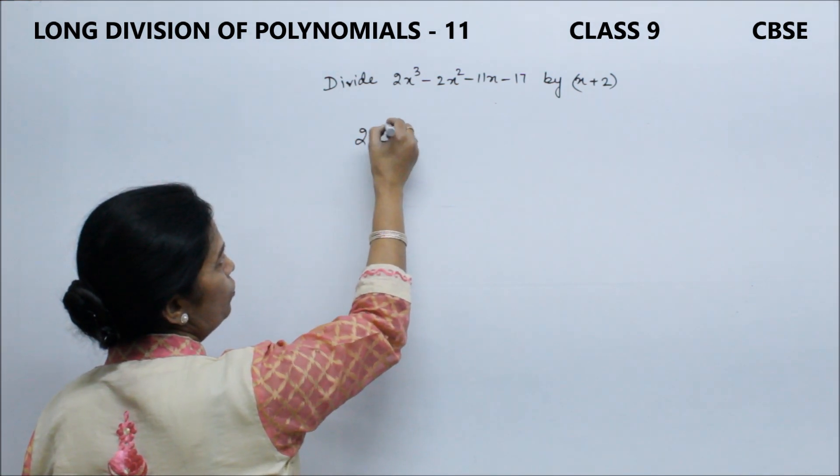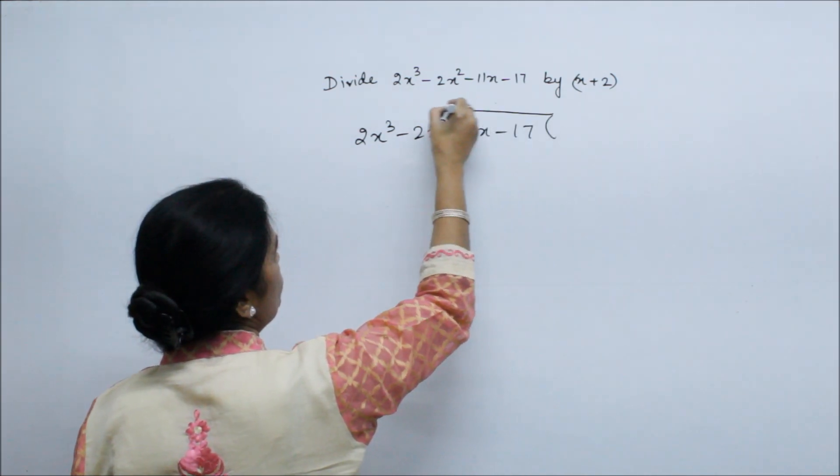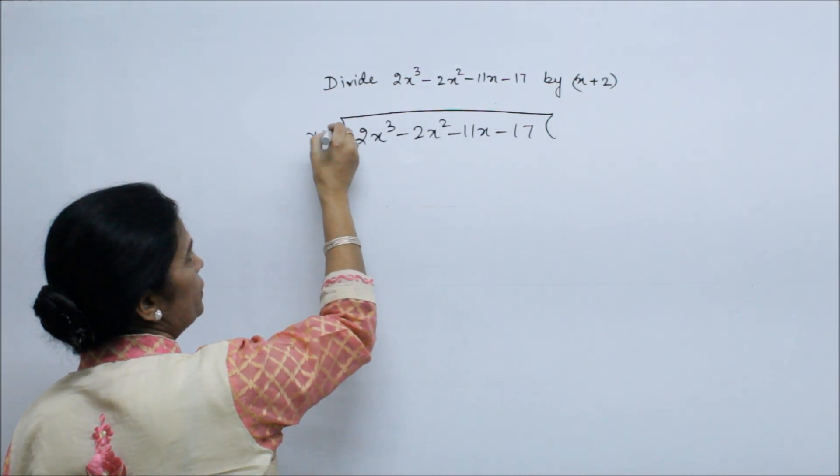Now the polynomial is given: 2x³ - 2x² - 11x - 17. We have to divide by x + 2.